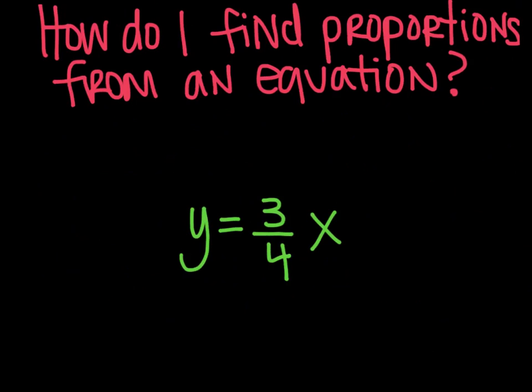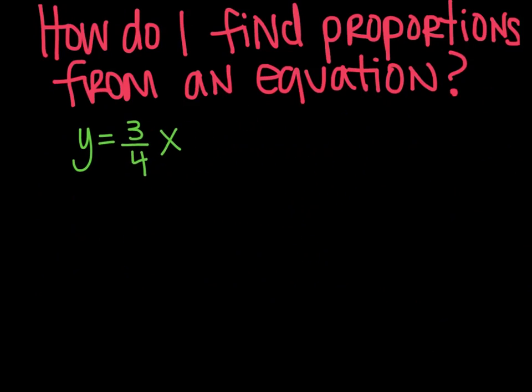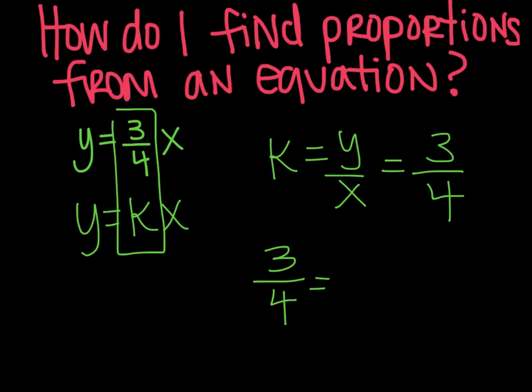How do I find proportions from an equation is the first question that we are going to address. So if you're given an equation like this one, y equals three-fourths x, how do you write the equation? Well, we know that y equals kx. So we know just from looking that three-fourths is k. And we know that k is always written as y over x. So I know then that it's three over four for k. Y is three and x is four. So then I can use that information like a fraction.